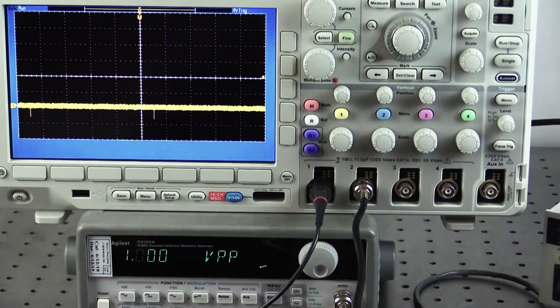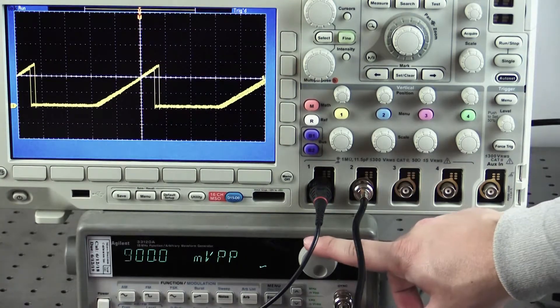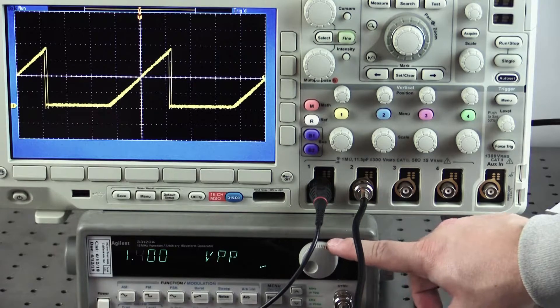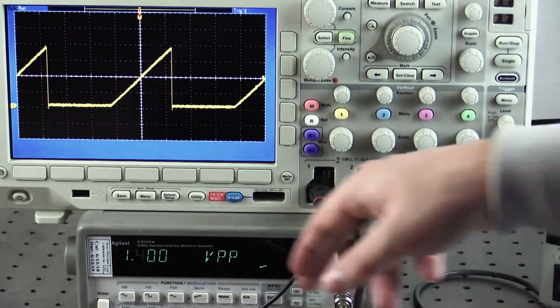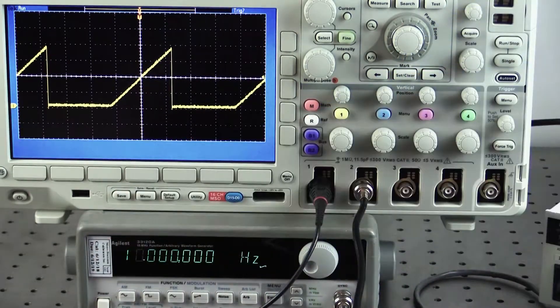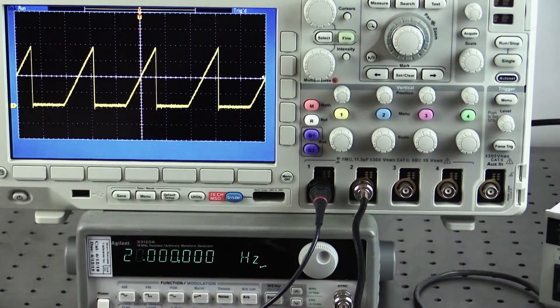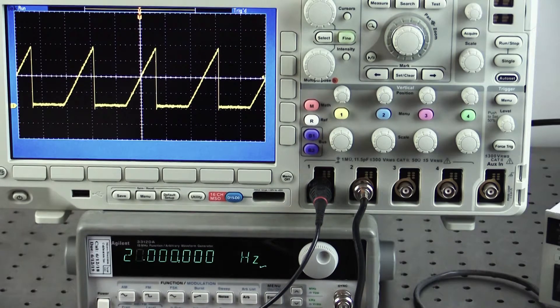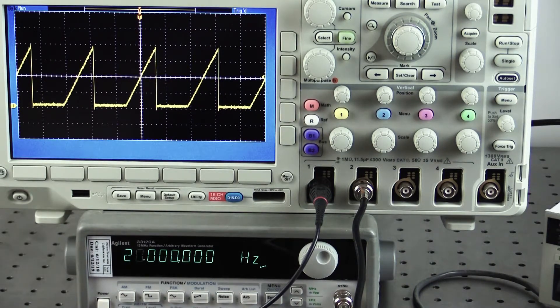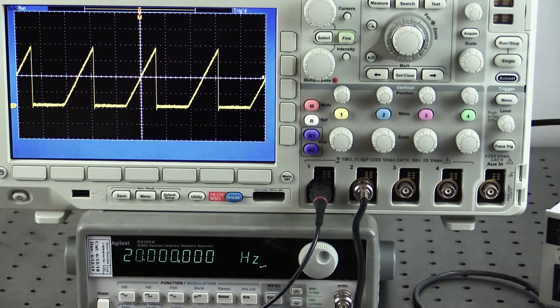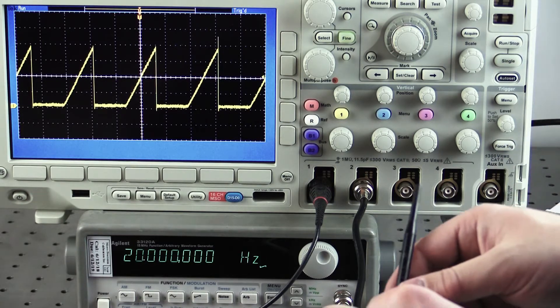The modulation transfer function in constant current mode is also 250 milliamps per volt. We set our function generator to produce a 1.4 volt peak-to-peak sawtooth signal at 20 hertz. This gives a maximum output current of 350 milliamps. Use an oscilloscope to monitor the laser diode output, again using LD Imon. The ILIM setting remains from the previous section. Enable the laser diode current.